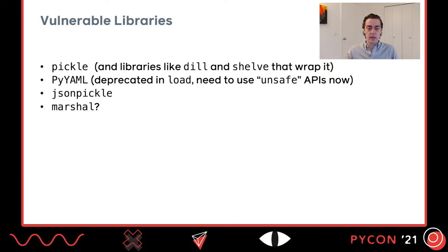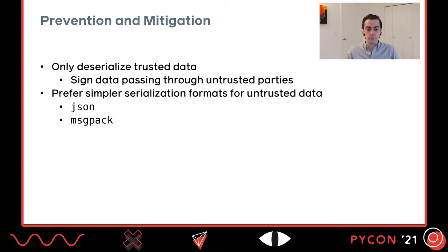Pickle isn't the only vulnerable library. Others that rely on pickle include shelve and dill, as well as PyYAML — though which version determines whether you need unsafe APIs. jsonpickle is also vulnerable. Marshal doesn't have a known exploit but its documentation warns against using it with untrusted inputs — treat it as vulnerable too. To prevent RCE through deserialization: only deserialize trusted data. If you need to pass trusted data through an untrusted party like a web browser, sign that data. If you must deserialize totally untrusted data, prefer simpler formats such as JSON or MessagePack.